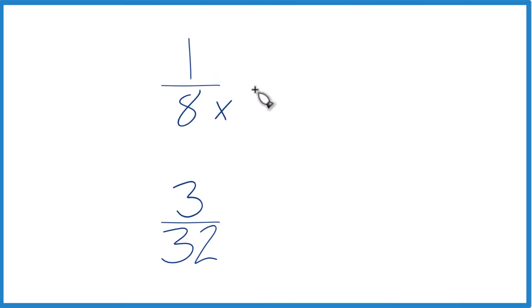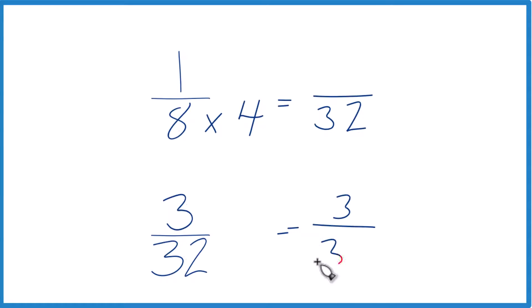I know that 8 times 4 equals 32. And then down here we already have 32, so we'll keep this the same as 3 32nds.